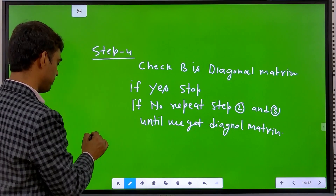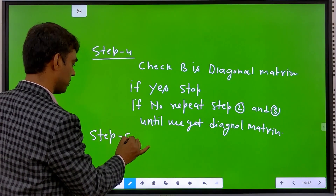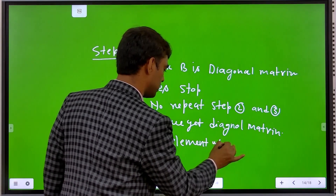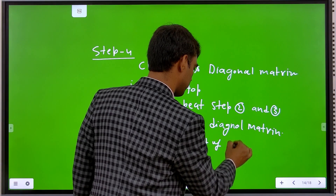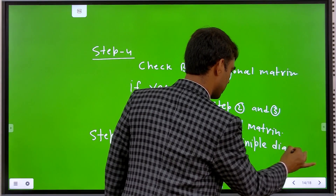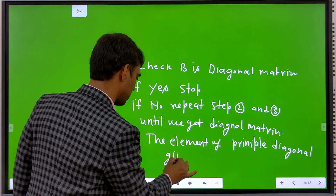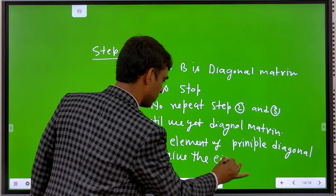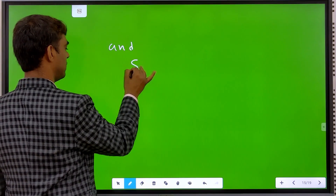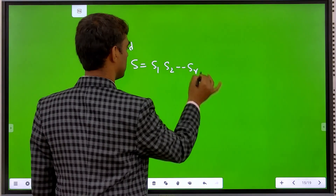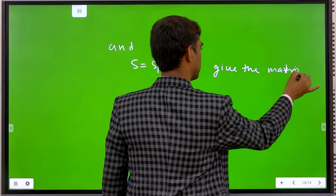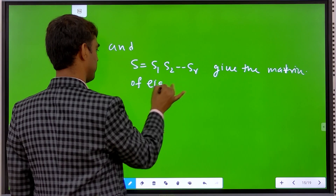Step 5: If we get the diagonal matrix, then the elements of the principal diagonal give the eigenvalues, and S equal S1 times S2 up to Sr gives the matrix of eigenvectors.